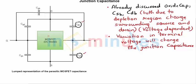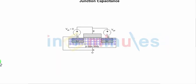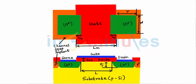As you keep on varying your terminal voltages — specifically your drain voltage — this depletion region will keep on changing, and the depletion region charge will keep on changing, which in turn changes the value of your junction capacitance. Before we proceed, let's focus our attention on the cross-sectional view, specifically the drain N-type diffusion.